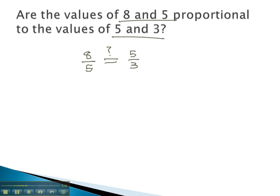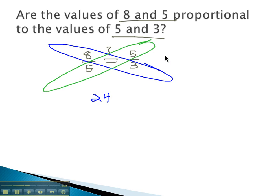And again, what's going to tell us that is the cross product. Multiplying the diagonal, 8 times 3, we get 24. Multiplying the other diagonal, 5 times 5, we get 25. Are those equal to each other? No, they're not. They're close, but not quite equal.